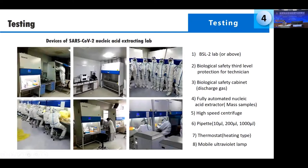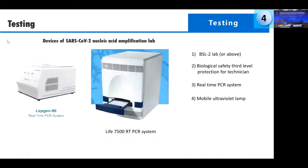These are pictures of our laboratory. For the amplification room and nucleic acid detection, we can also use a real-time PCR system. This also requires a BSL-2 lab with biological safety level 3 protection for technicians, a real-time PCR system, and a mobile ultraviolet lamp.